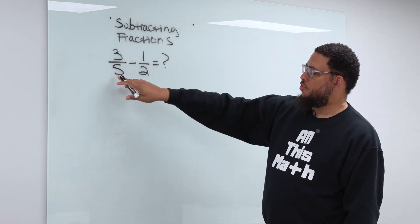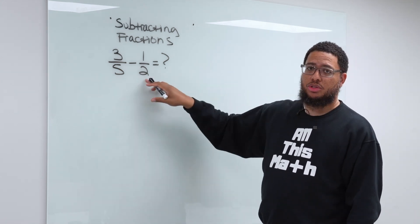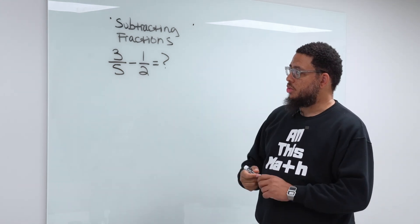So we want to find a common denominator. Now, how do you do it? One of the ways to do it is just to multiply the two denominators together. Five times two, that gives you 10.